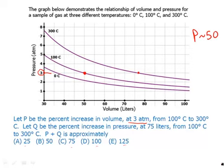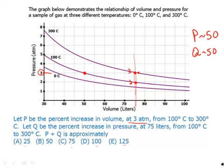Now the second part: let Q be the percent increase in pressure at 75 liters. We're going to stay on the 75-liter vertical line of fixed volume and increase from 100 to 200 degrees. That's an increase from approximately 2 to 3 atmospheres — an increase of 1. Since 1 is half of 2, this is also approximately a 50% increase. We're being very general with our approximations. So P plus Q is approximately 100%. Answer choice D, done.